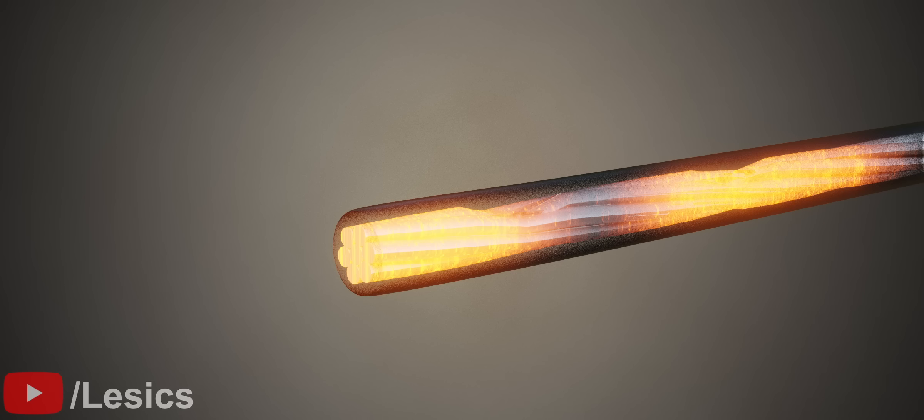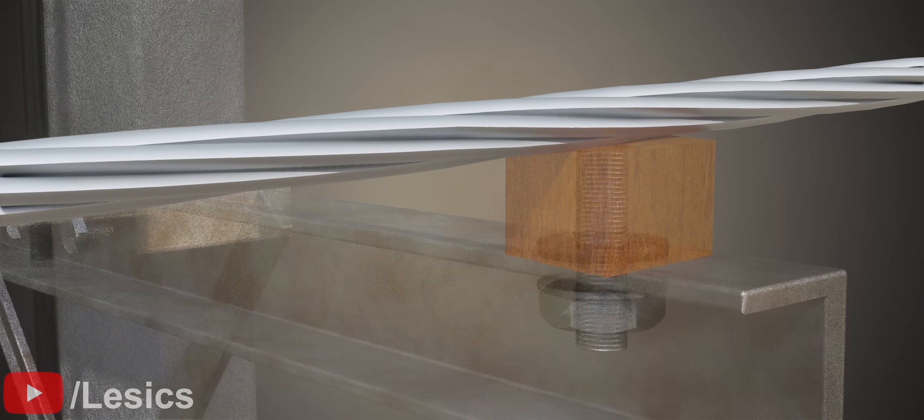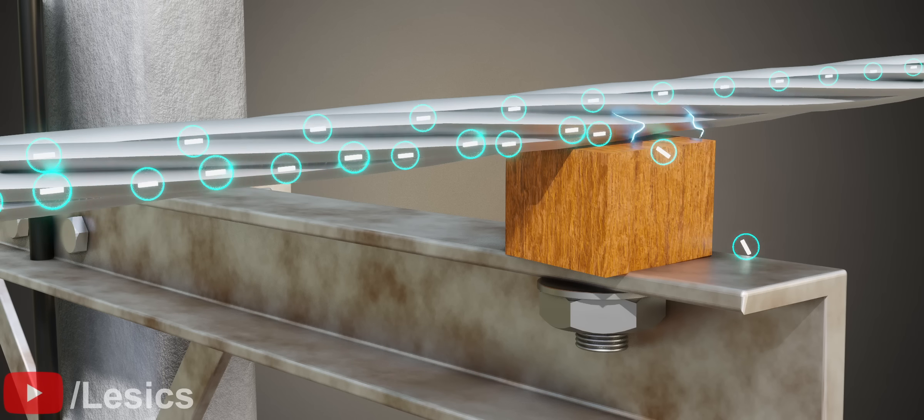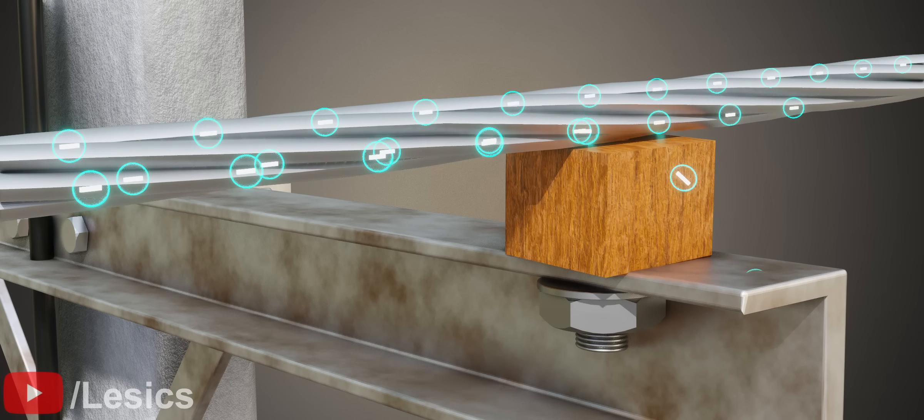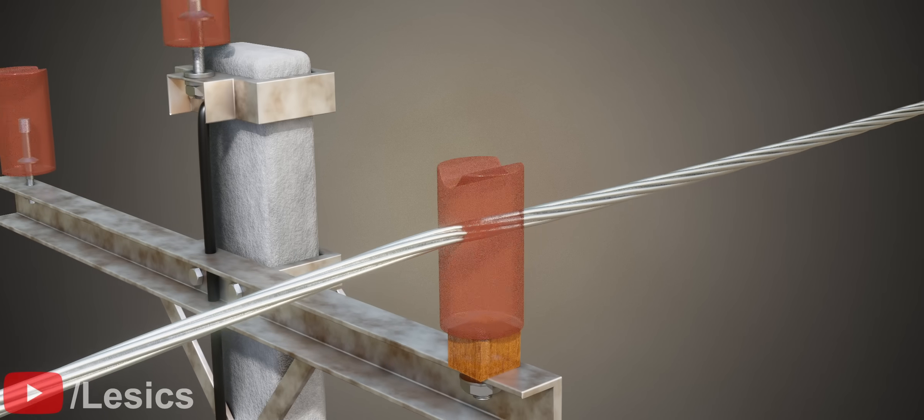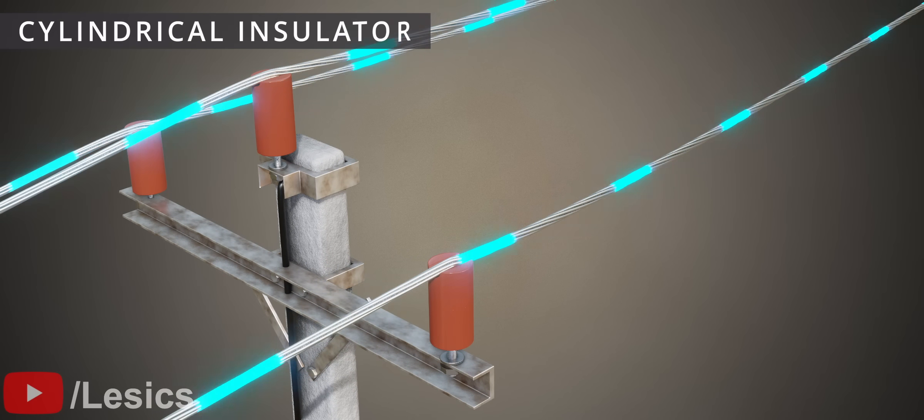However, there is an issue with this naked transmission line when any conductor is placed near to it. The high-powered electrons start jumping from wire to conductor, which leads to sparks. The simple solution is to place an insulator wherever required. Here, it is placed between the wire and the pole. Now we have perfectly isolated the wire from the pole.